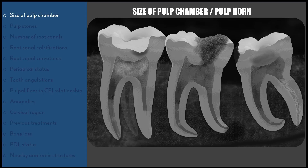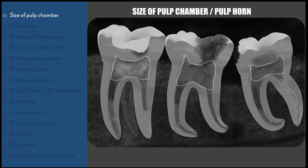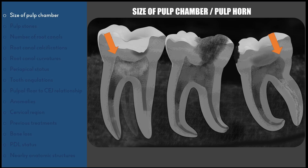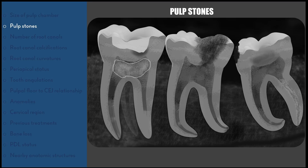First and foremost, we should look into the size of the pulp chamber. It is always said that if the size of the pulp chamber is large, then root canal treatment is going to be easy — access cavity preparation, locating the root canal orifice, and almost all the steps in root canal treatment are simplified by a large pulp chamber. Not only the size of the pulp chamber, pulp horns also should be taken into consideration. More than evaluation before root canal treatment, while doing restorative procedures or caries excavation in a vital tooth, pulp horn evaluation is the key to success.